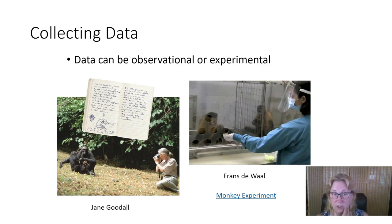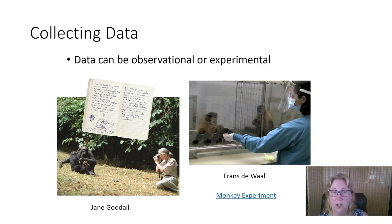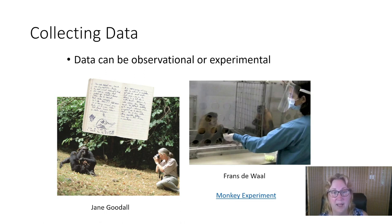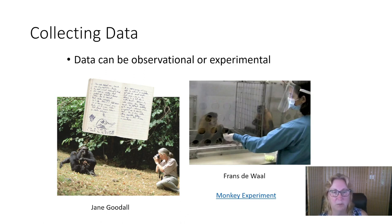Another of Goodall's big discoveries was that chimpanzees are not vegetarians. Not only do they eat insects — making them omnivores — they also kill and eat small animals: lizards, small monkeys, ripping them apart and eating their flesh raw. That was absolutely not known before her work, and it changed how we feed chimpanzees in zoos — we now give them occasional higher-protein treats.